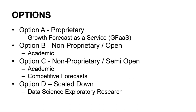Some options for how this product could shake out: Option A is proprietary — growth forecast as a service, where a municipality pays an annual fee, uploads data, and downloads results. Option B is completely non-proprietary and open, perhaps run by academia. Option C is a blend — non-proprietary but semi-open, with forecasts kept somewhat competitive. Option D — which I would actually recommend starting with — is a scaled-down exploratory data science research version. Learn the data science first before building any tools.